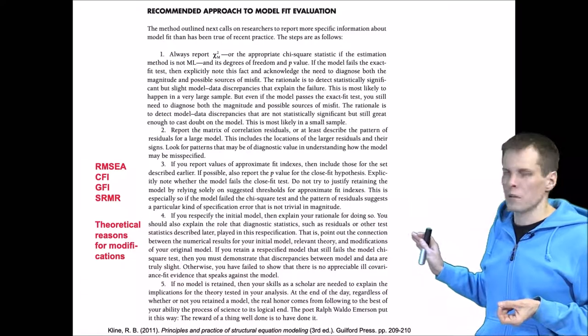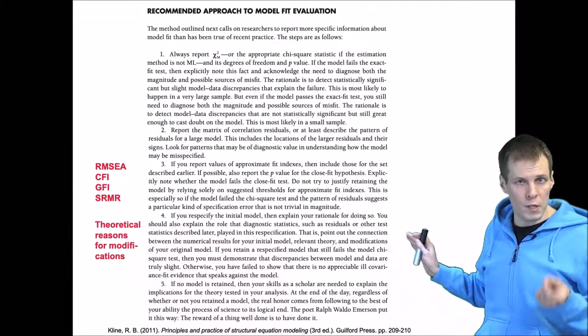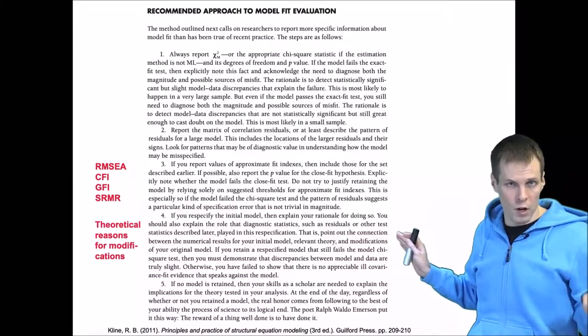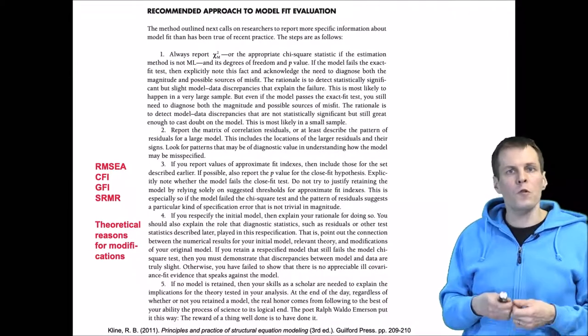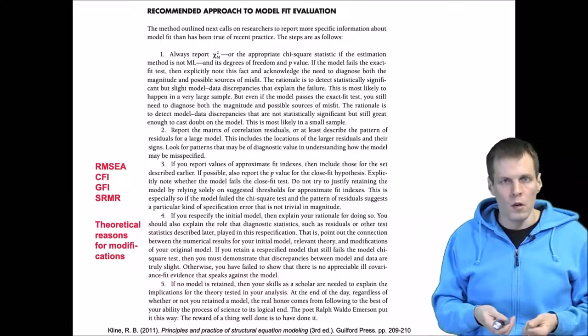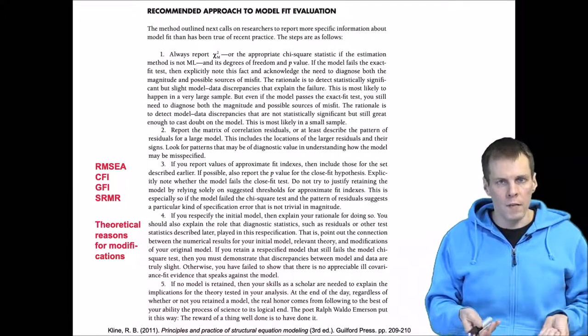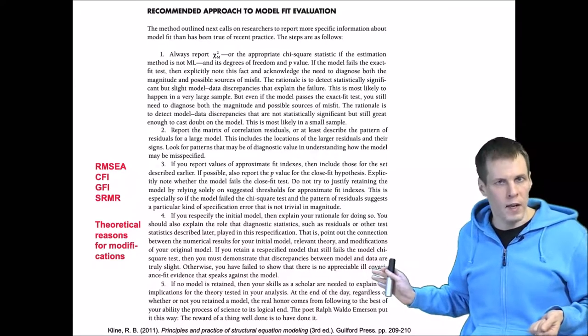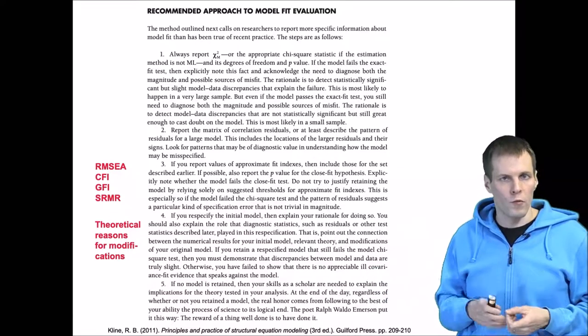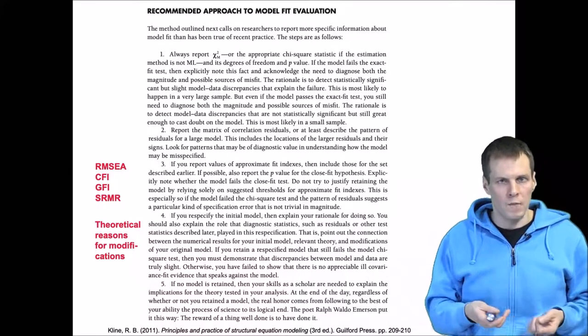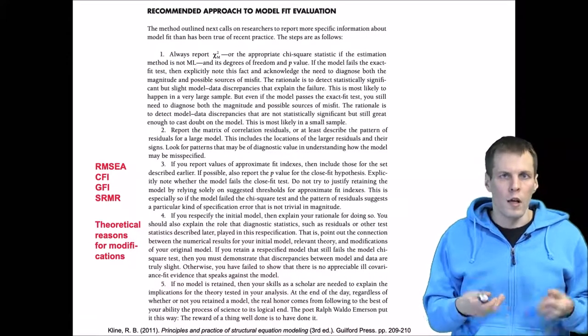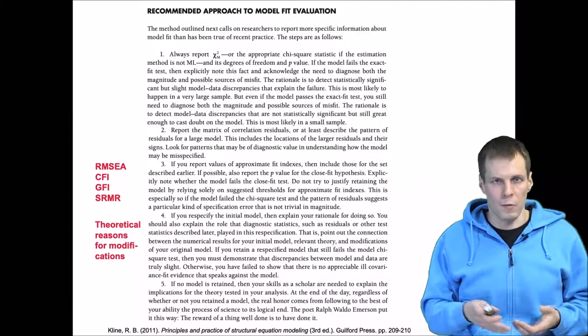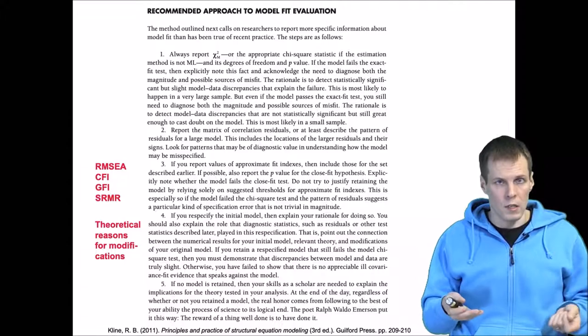All these theoretical reasons for model re-specification, if you add something, should be reported along with the rationale for doing so. If you choose to retain a model where the chi-square is significant, so there is nothing reasonable that you can do, then you need to provide evidence, for example in the form of residual covariances, that the degree of misfit is really small, and you can do sensitivity analysis by freeing some of the parameters to see how that influences the results.